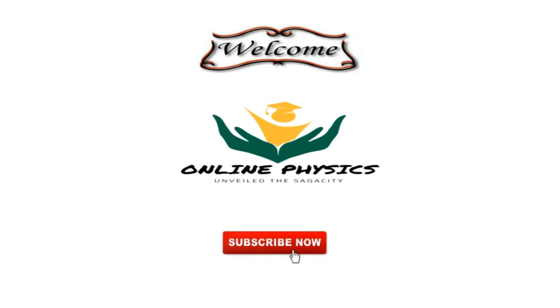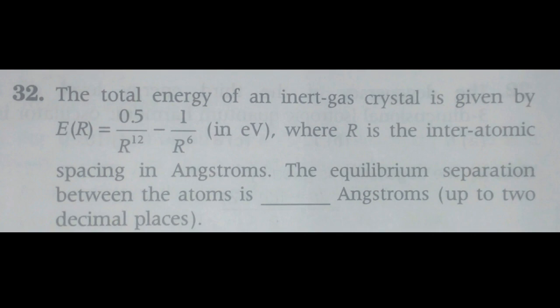So subscribe this channel to get more videos on physics. The total energy of an inert gas crystal is given by this, where R is the interatomic spacing in angstrom. The equilibrium separation between the atoms is...